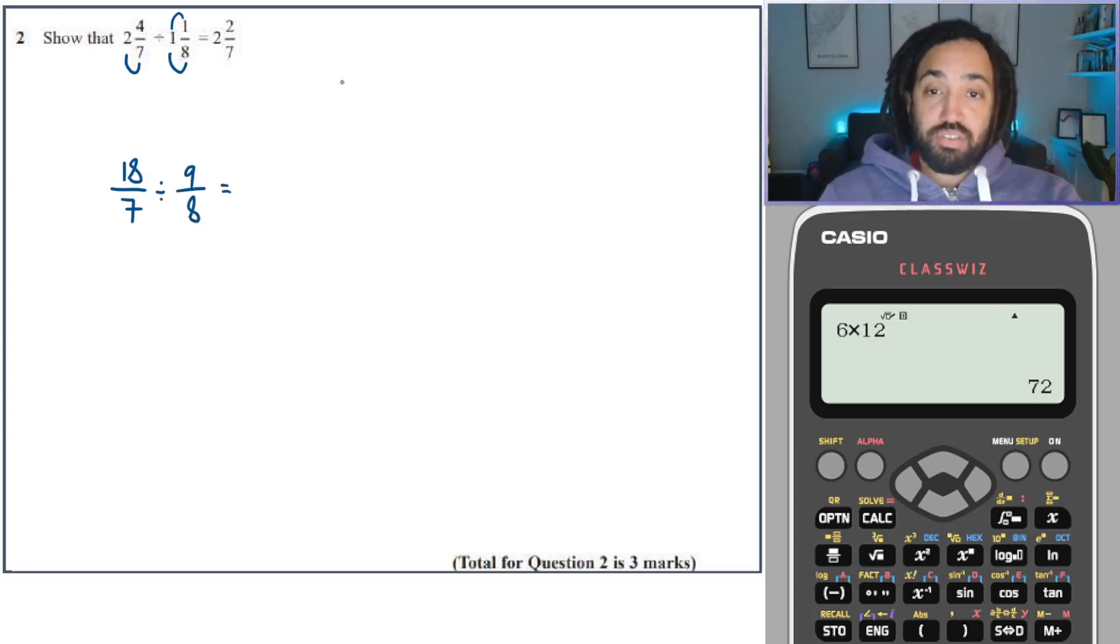Now, what we have to remember when dividing fractions is KFC keep, which means keep the first one the same. Flip, which means flip the second one over. And change, which means change the sign to a multiplication.